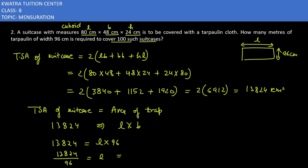Now how many suitcases to cover? 100 suitcases cover. So what will happen to you? Length of tarpaulin will be 144 into 100, which is 14,400 cm.